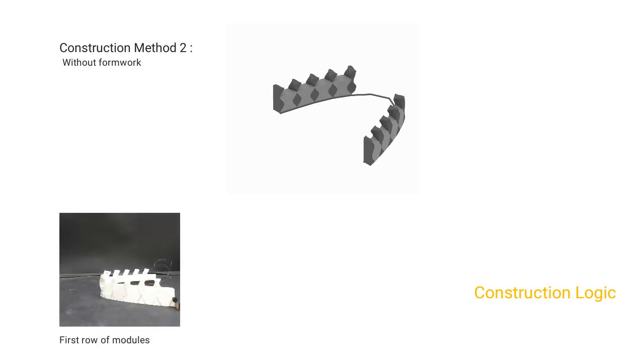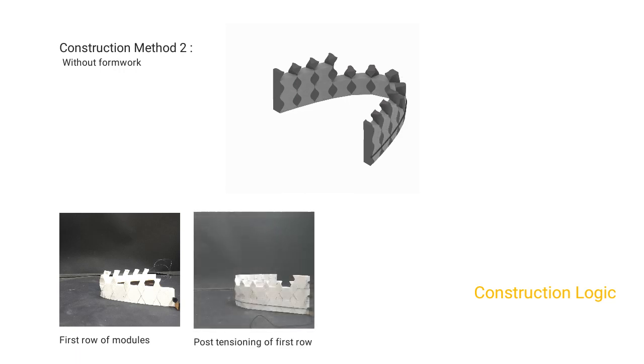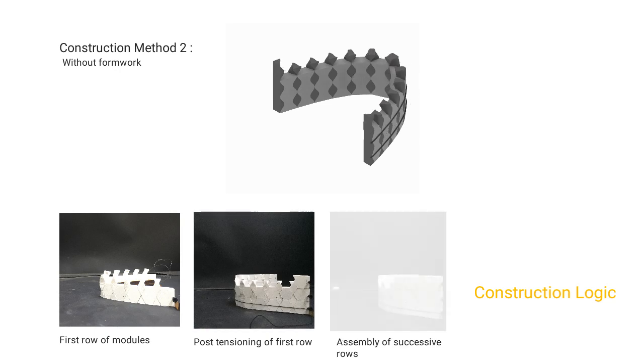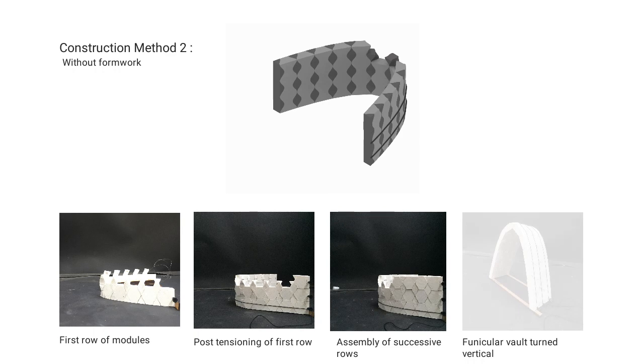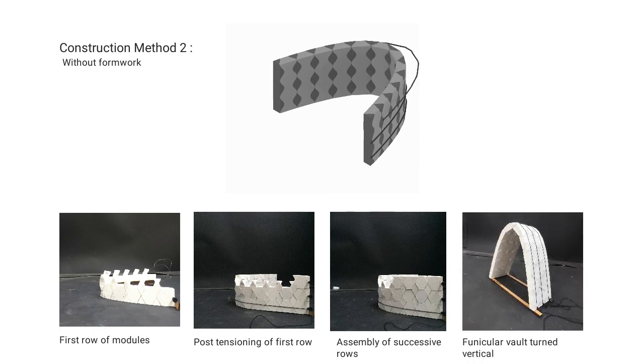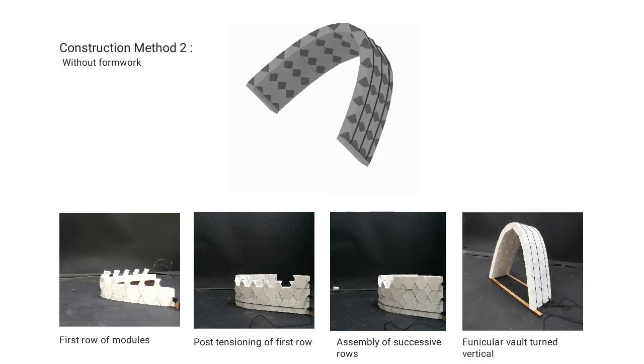Construction method two: Here we begin by drawing a catenary arch on the ground along which modules are assembled as shown in the video and following images to build first arch. It is kinematically constrained with tension cables before the next layers are assembled. The process is repeated for successive layers. On completion of the required number of layers, entire assembly is turned vertical and placed in its position with the help of a crane or mechanical system.